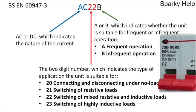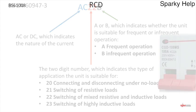As we saw on the previous picture, this particular one is 100A, AC22A. AC means it can switch an AC current. 22 means switching of mixed resistive and inductive loads, which covers the vast majority of installations. And A means it's for frequent operation — so perfectly acceptable in the vast majority of installations. The other option you could have is an RCD, covered under BS61008.